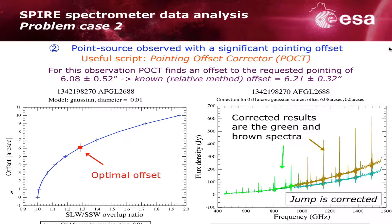These are the results. What POCT found in this case was a pointing offset of 6.08 arcseconds. Comparing that to the known offset derived using the relative method in Valtchanov et al., that was 6.21 arcseconds. So they agree within the errors — a good result. We can see the corrected spectra in the right plot, and the jump is corrected.